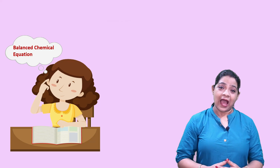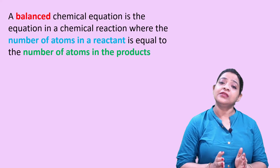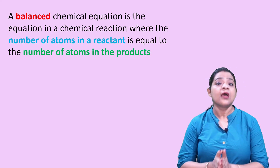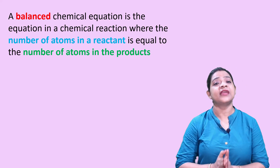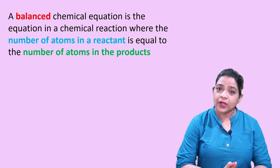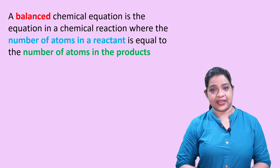Let's try to understand it. We all know that in a chemical reaction, two or more reactants combine together to give rise to new products. Now we can say that a chemical equation is balanced when the number of atoms in the reactant side is equal to the number of atoms in the product side.